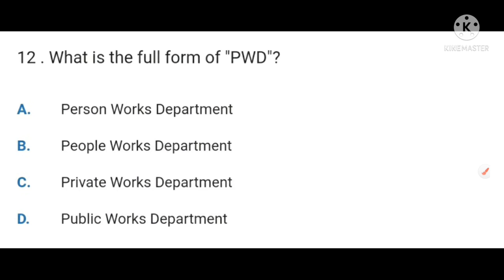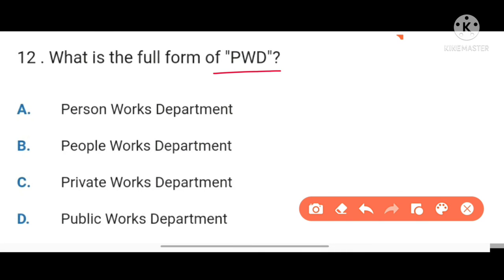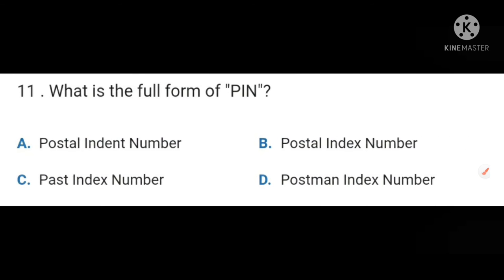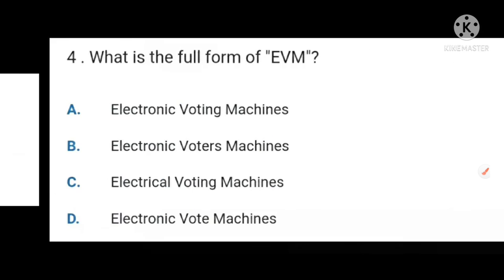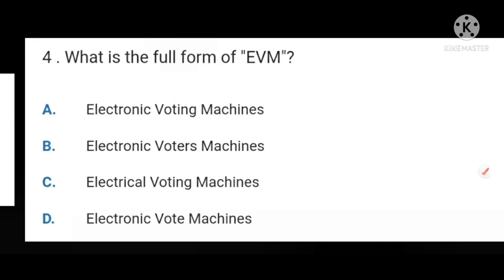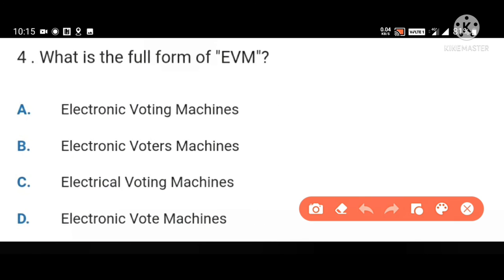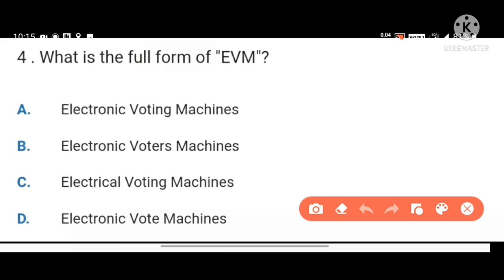Next, what is the full form of PWD? Public Works Department. Next, full form of PIN is Postal Index Number. Next, EVM stands for Electronic Voting Machines.